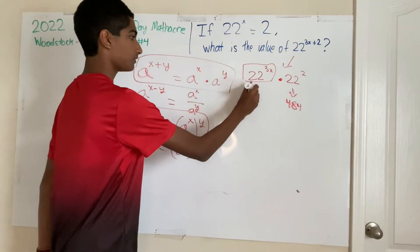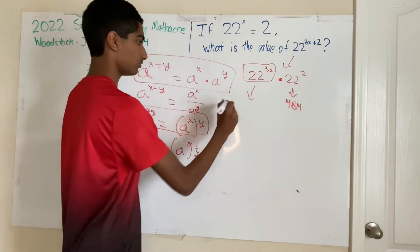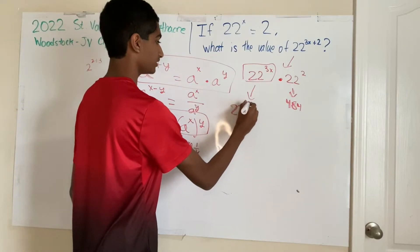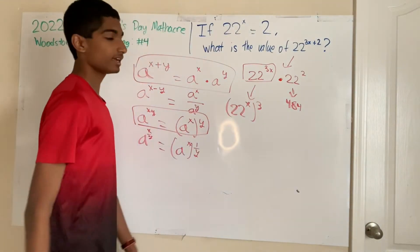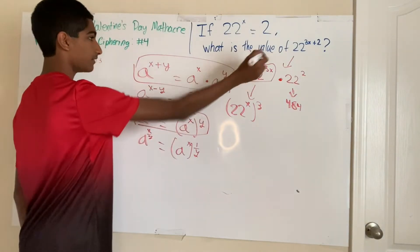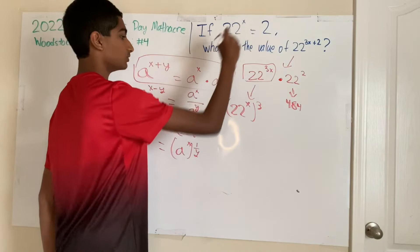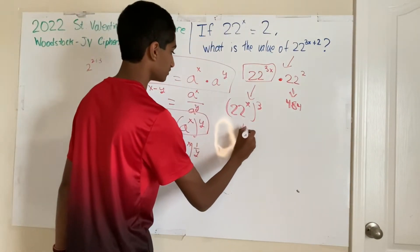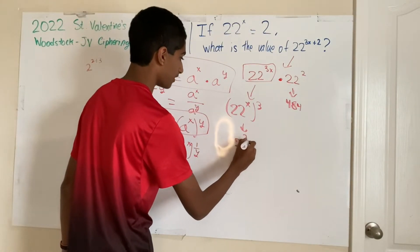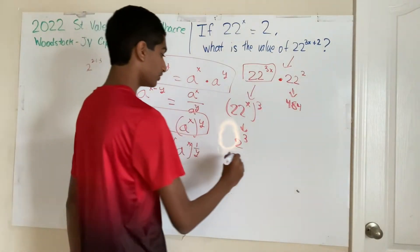So from here we can isolate x. And we can have 22 to the power of x, 3 times. And that is what 22 to the power of 3x equals. And we know what 22 to the x equals from here. So we can just sub that in and you have 2 to the power of 3. And 2 to the power of 3 is 8.